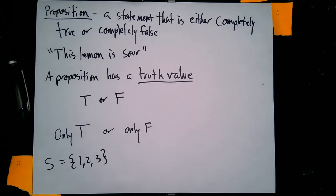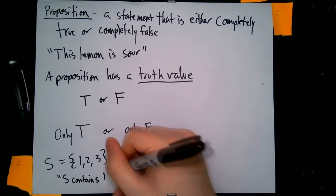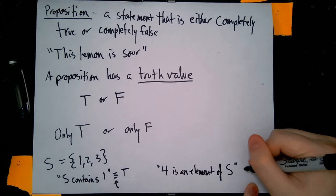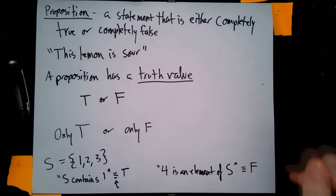Now what I want to do is take a look at this example. Let S be a set containing one, two, and three. We can actually look at propositions that are related to our set S. The proposition "S contains one" is a proposition that is in fact true. This little symbol that I just drew right here is what we call a logical equivalency symbol. So the proposition "S contains one" is logically equivalent to true. Now if we look at this next statement, "four is an element of S," this is actually going to be logically equivalent to false because S does not contain four at all. So here we have an example of a true statement and a false statement that has to do with our set S.